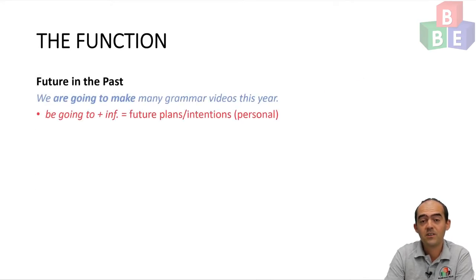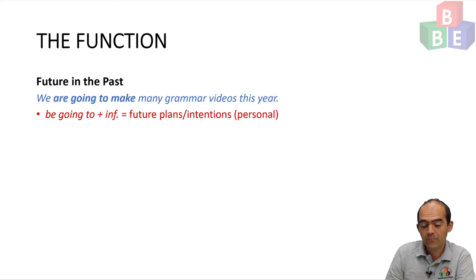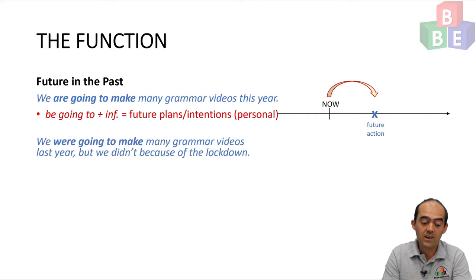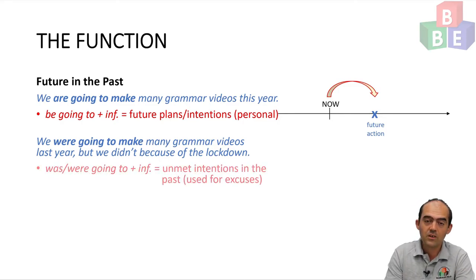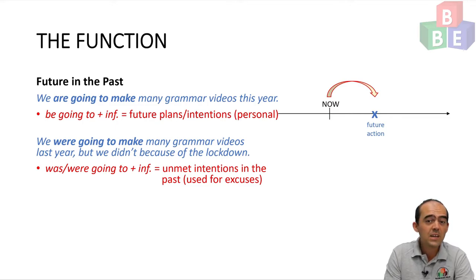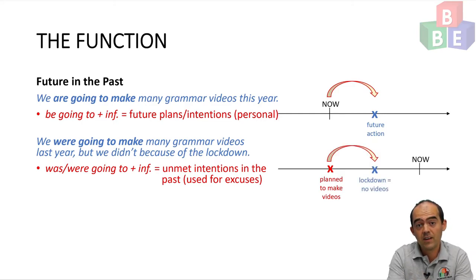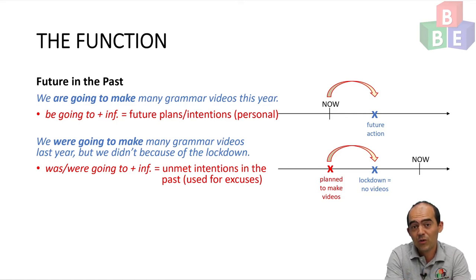I can also use be going to plus infinitive to talk about personal plans or intentions. For example, 'We are going to make many grammar videos this year.' For future in the past, I would say 'We were going to make many grammar videos last year, but we didn't because of the lockdown.' Here I am using was or were going to plus infinitive to talk about unmet intentions in the past — intentions which I had which never happened. I normally use this construction to make excuses. I planned to make videos in the future, then the lockdown happened, which meant no videos. But of course the lockdown is now behind us — it's in the past — so this is future in the past.